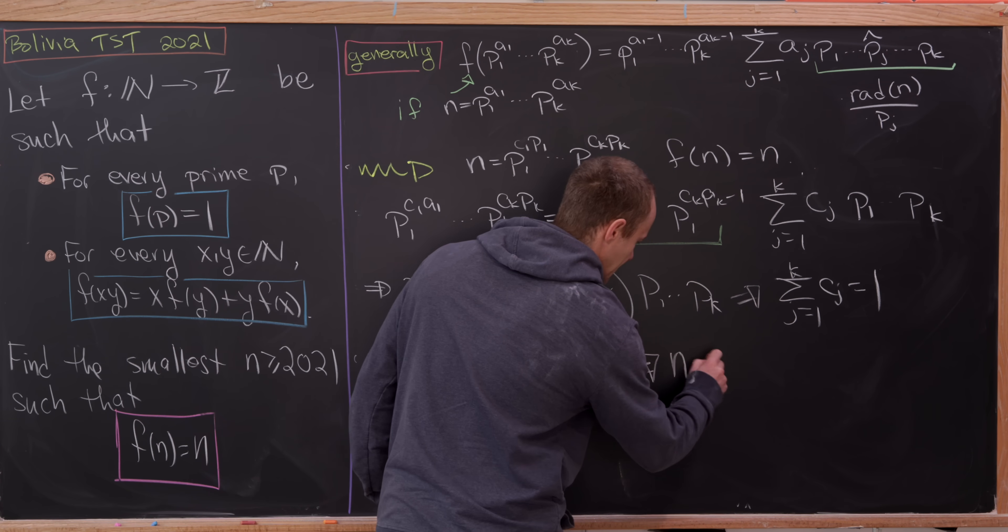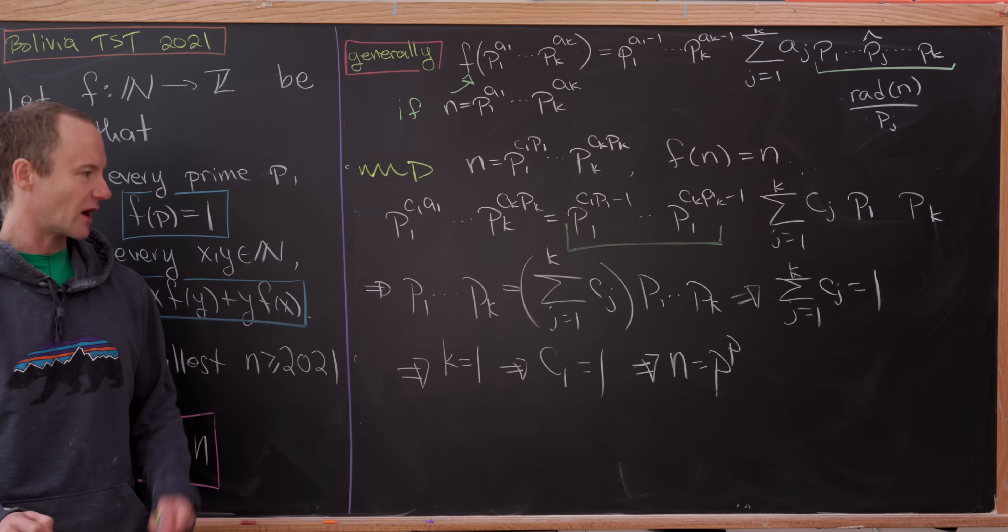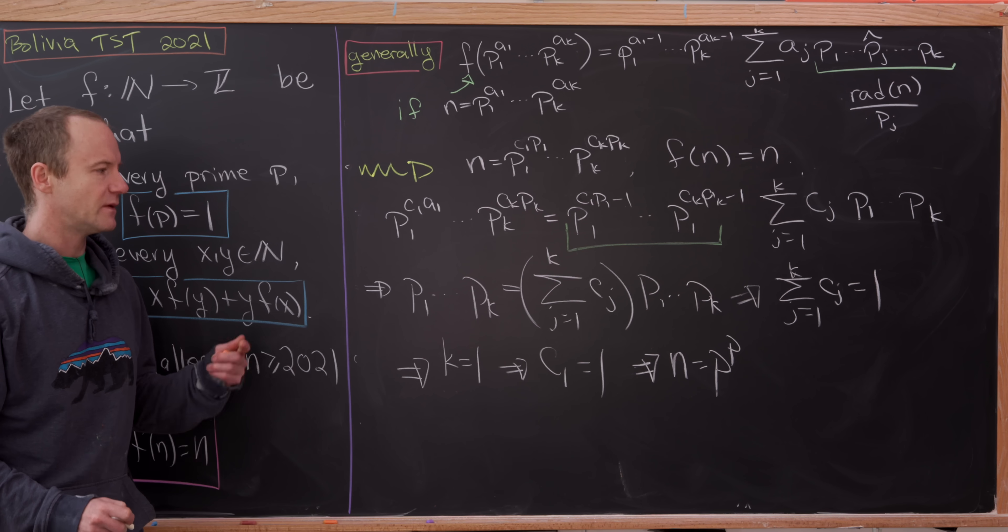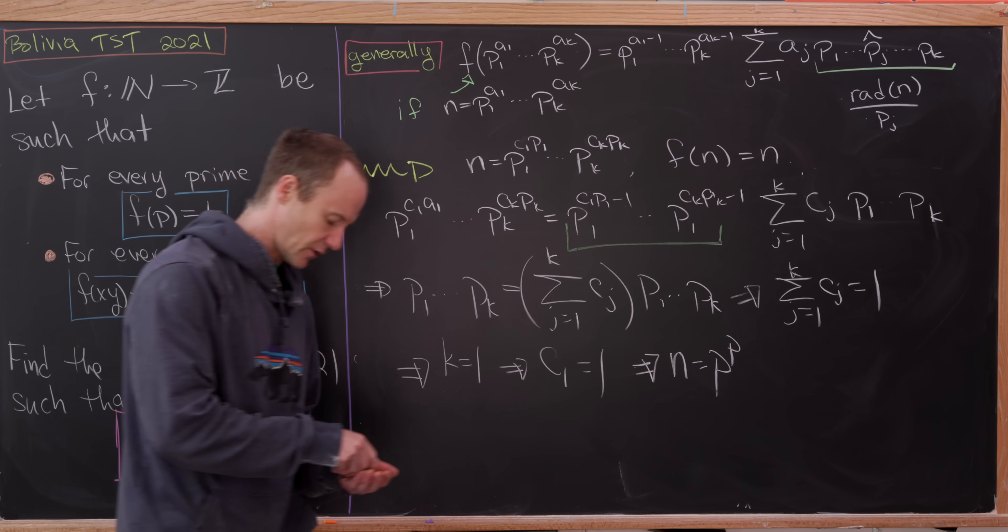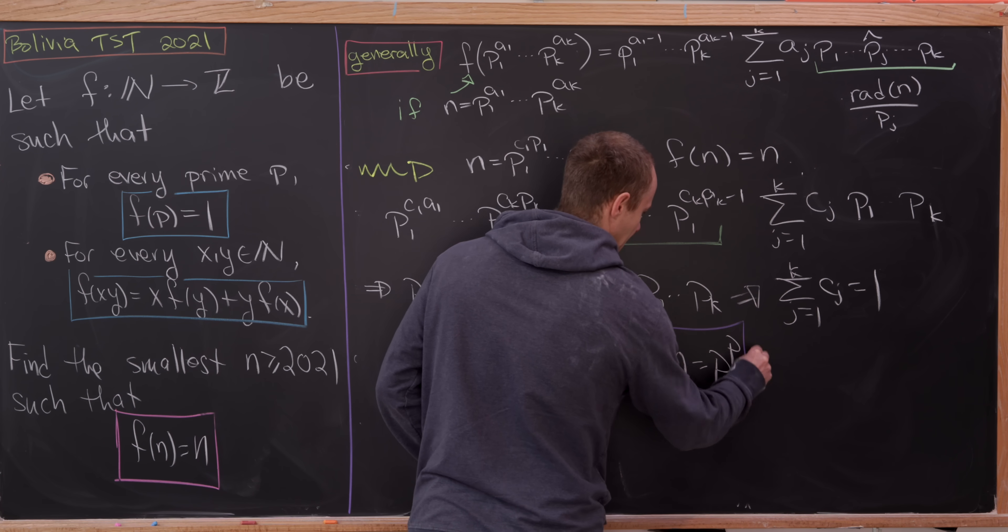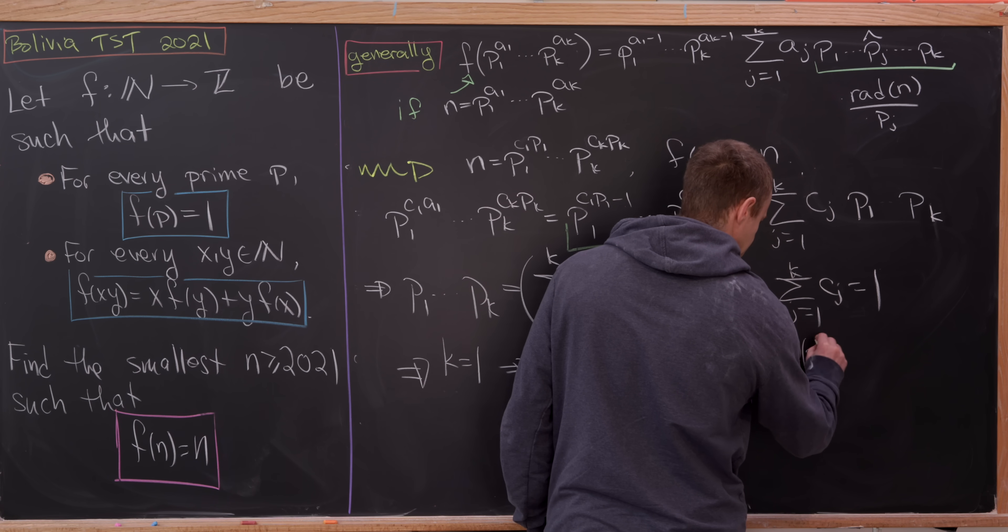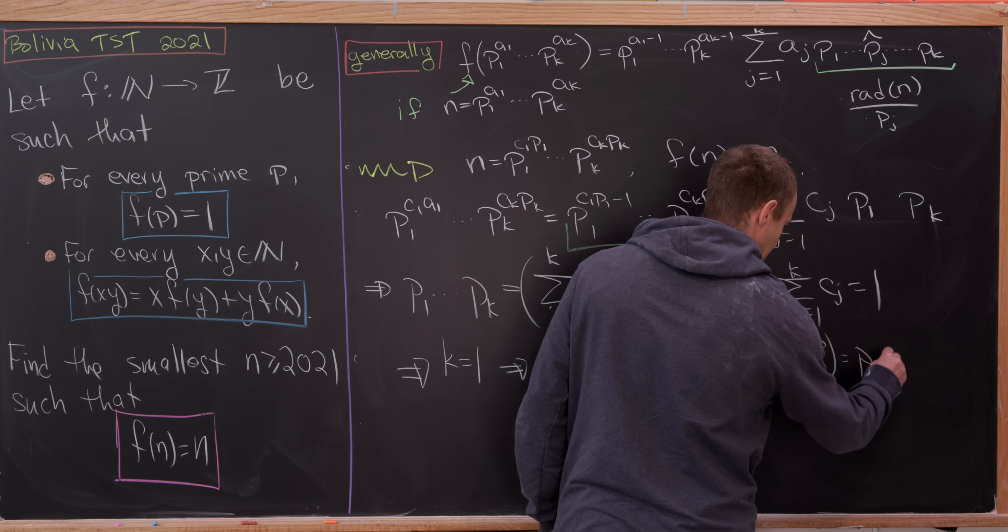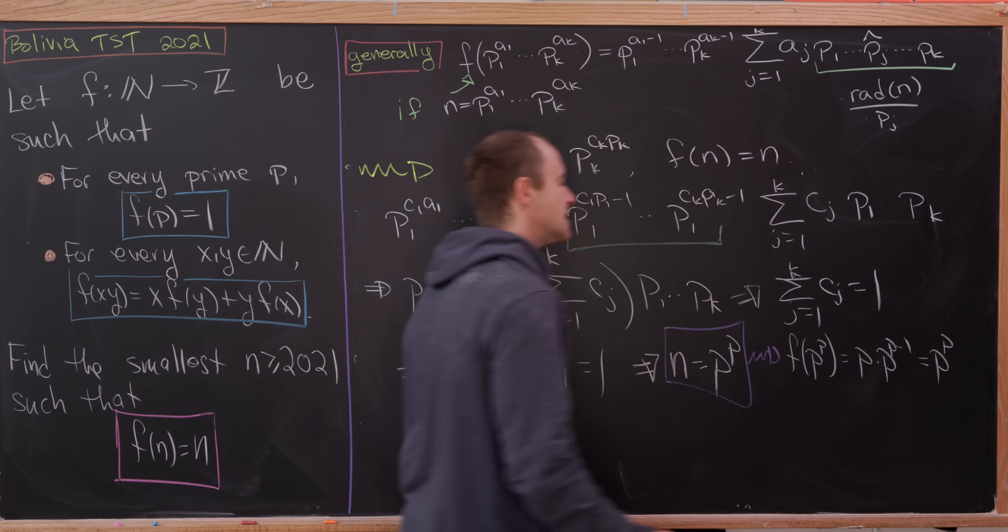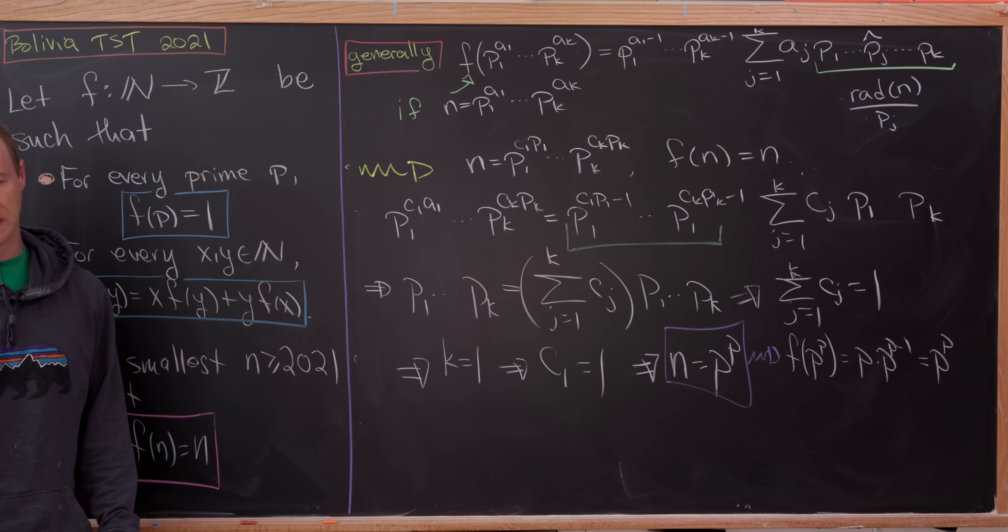In other words, our n is equal to p to the p power, I could call that as p₁ to the p₁ power, but we might as well just simplify it. So let's maybe put a box around that. And let's check that everything works. So let's notice that f(p^p) is equal to p times p^(p-1), which is p^p. So yes, this does solve our equation f(n) equals n.